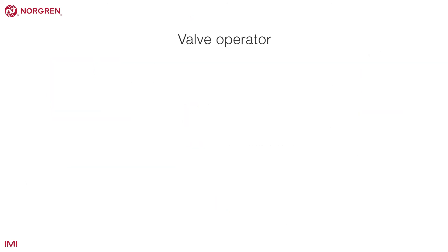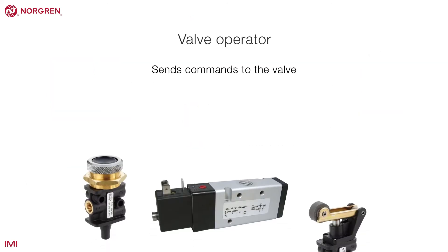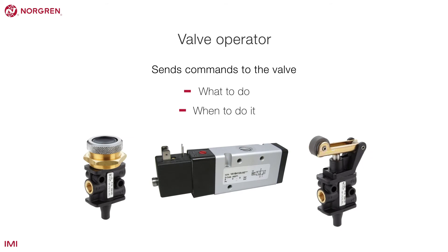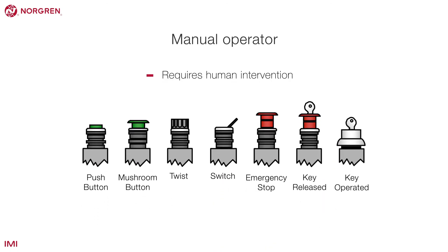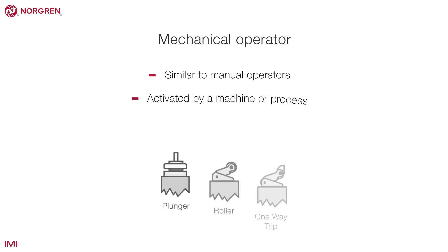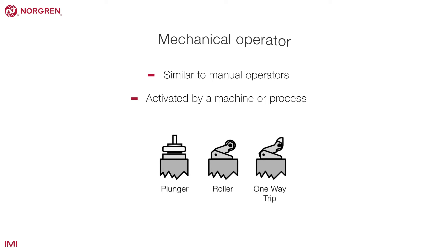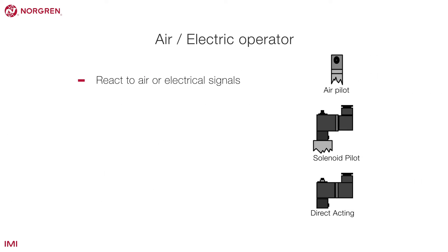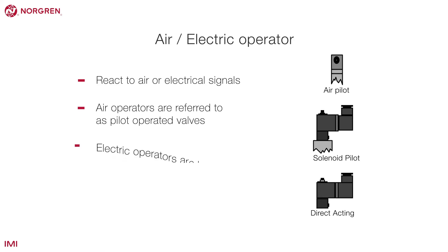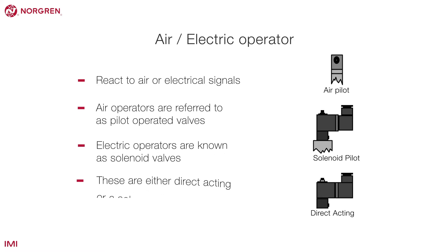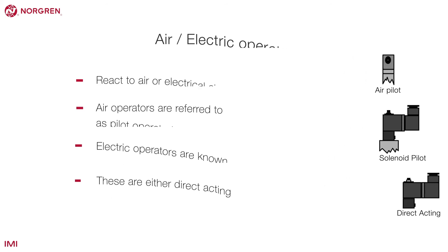A valve operator is the device that sends commands to the valve — it tells a valve what to do and when to do it. They fall into three categories: manual operators that require human intervention; mechanical operators that are similar to manual operators but are activated by a machine or process; and signalled operators that react to air or electrical signals. Air operators are referred to as pilot operated valves, while electric signalled operators are known as solenoid valves and are either direct acting or a solenoid pilot.